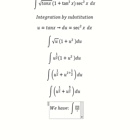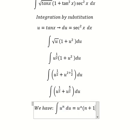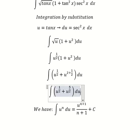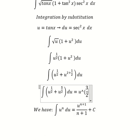The formula is the integral of u to the power of n du equals u to the power of n plus 1 over n plus 1 plus C. Putting 1 over 2 in here gives us 3 over 2.